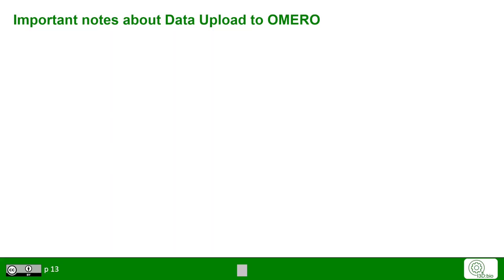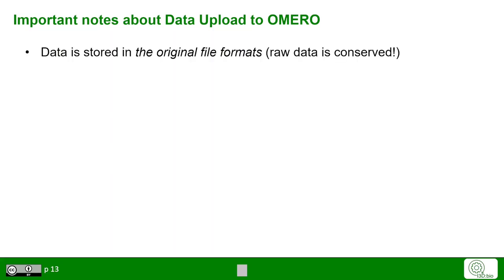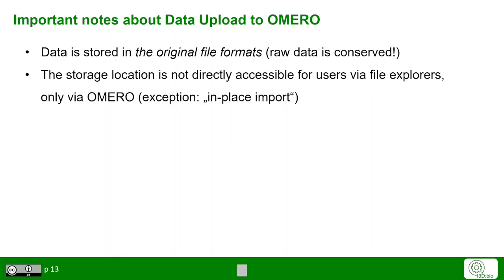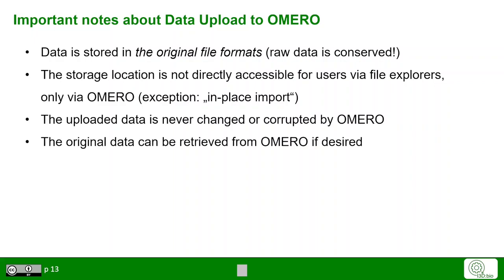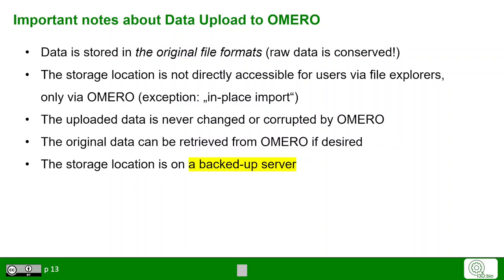Some notes relevant to users for data upload in Omero: the data is always stored in the original file formats, so the raw data is conserved. The data location is not directly accessible for users via file explorers, only via the clients through Omero — the exception being the in-place import option. The data is never changed or corrupted by using Omero. The original data can also be retrieved again through Omero if desired, and you can ask the admin for help. In most cases, the storage location is on a backed-up secure server.